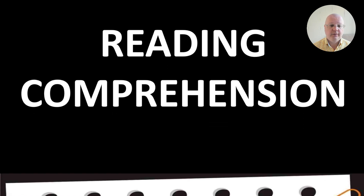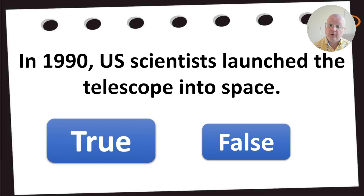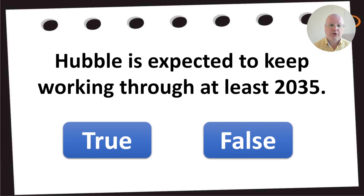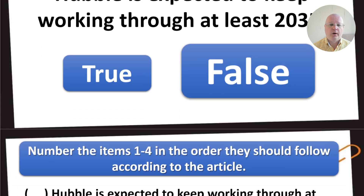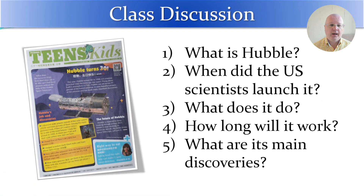Looking at the reading comprehension questions: question one — 'In 1990, U.S. scientists launched the telescope into space. True or false?' You can use true or false questions, or you can ask students to number items 1, 2, 3, 4 in the order they should follow according to the article, and then have a class discussion. It's up to you how many questions you want to pick.